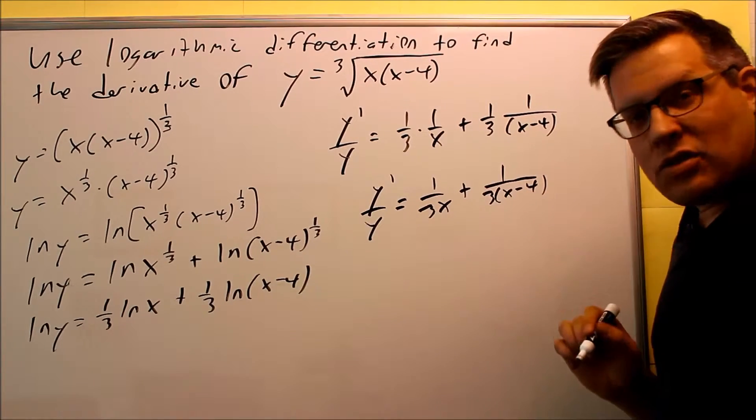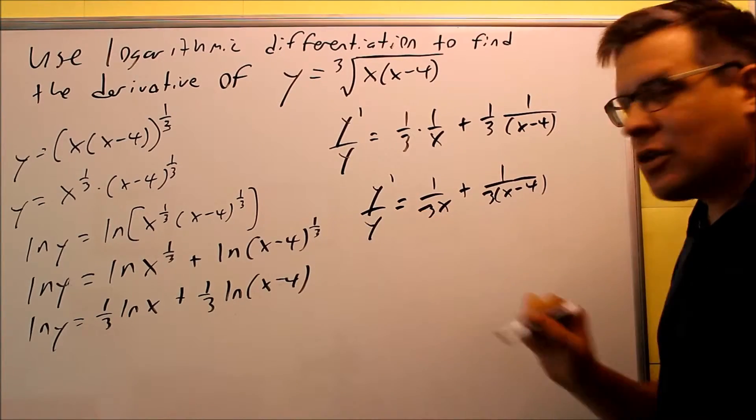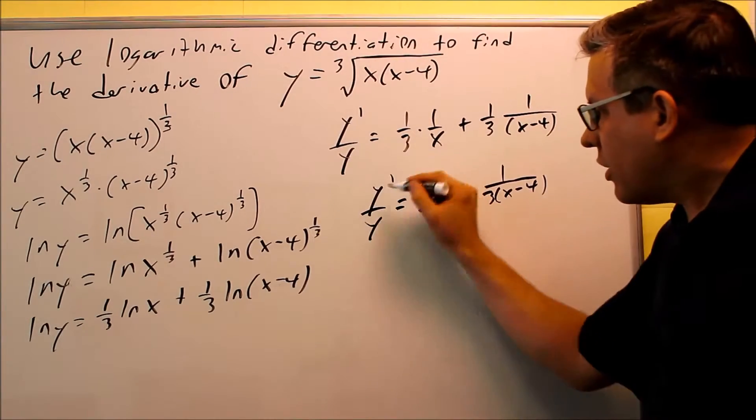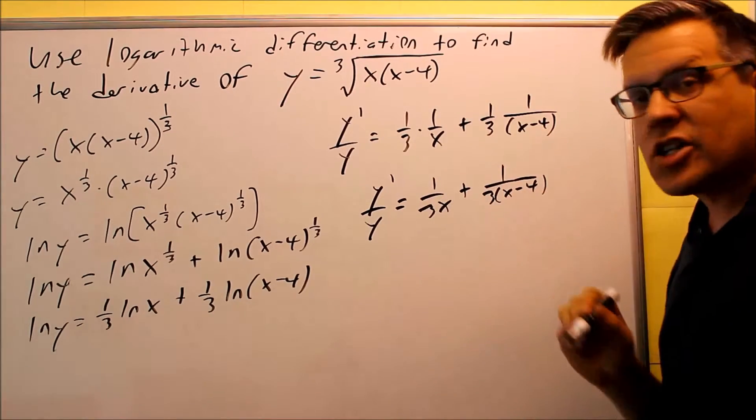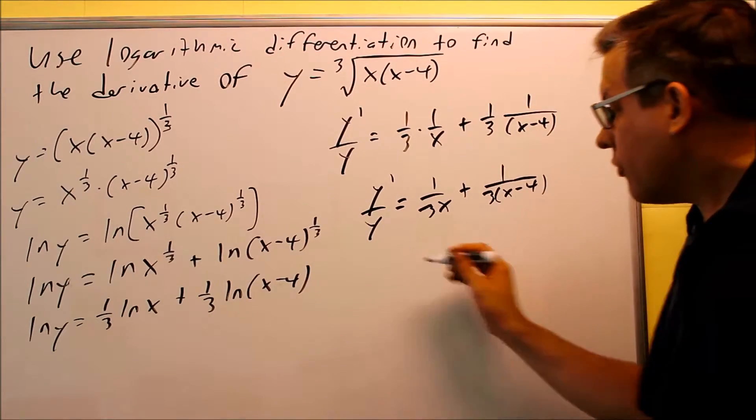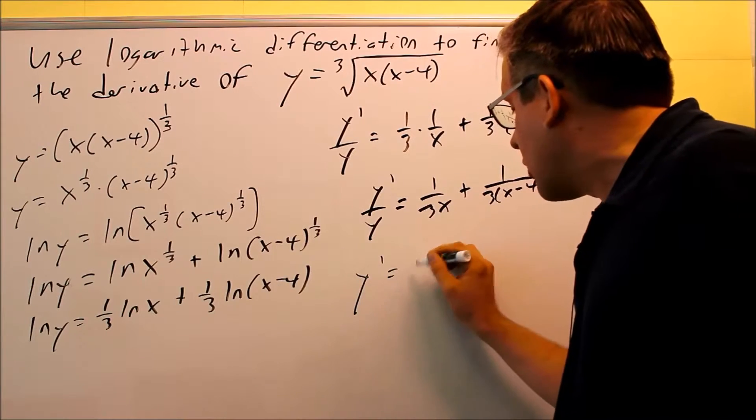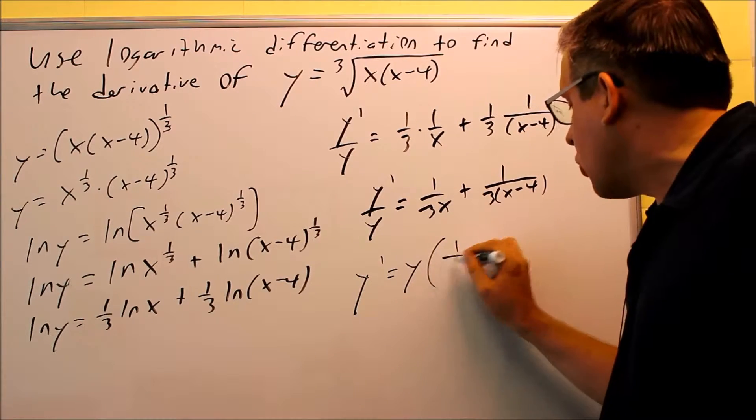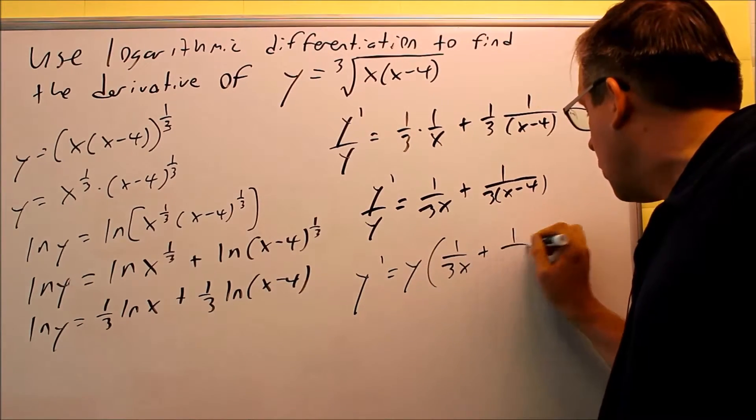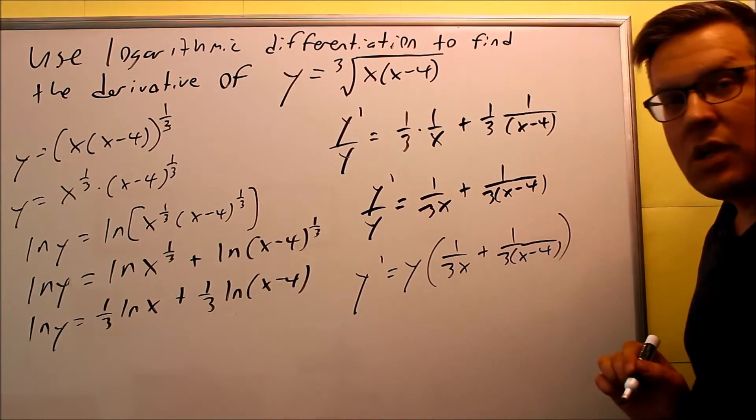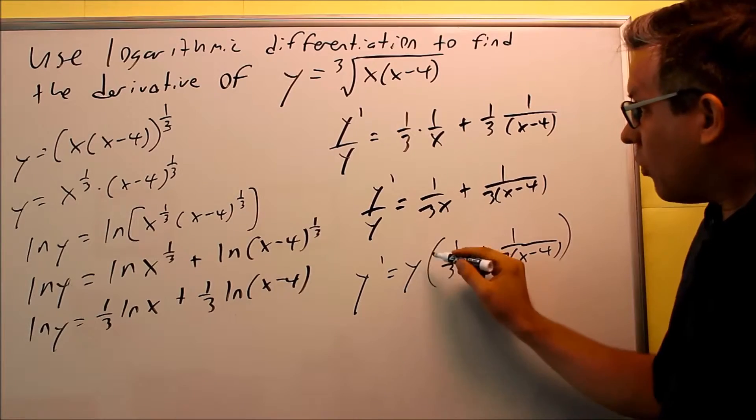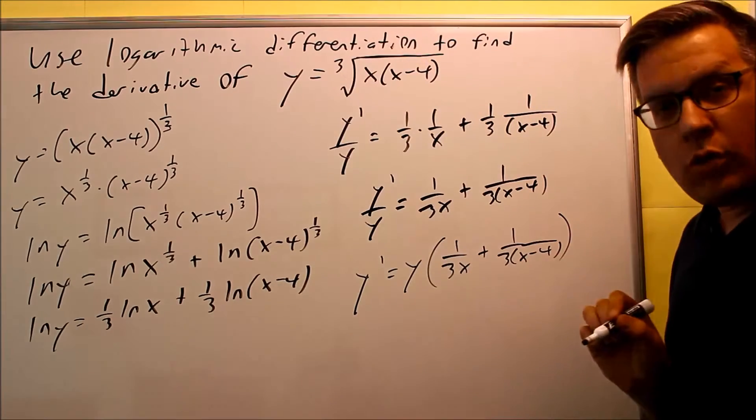Now to get the answer I need to multiply this by a y, because I want to get the derivative of y by itself. I'm solving for that because that's what the question asked me for. We want to find the derivative. So y prime, if I multiply both sides, I get y times 1 over 3x plus 1 over 3 times (x - 4), just like that.